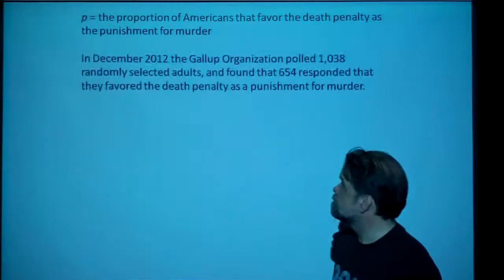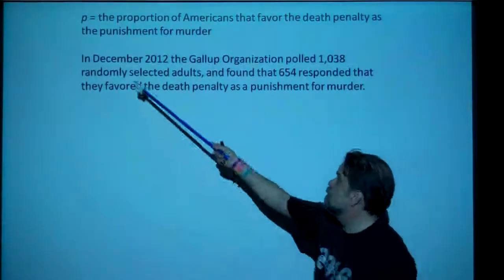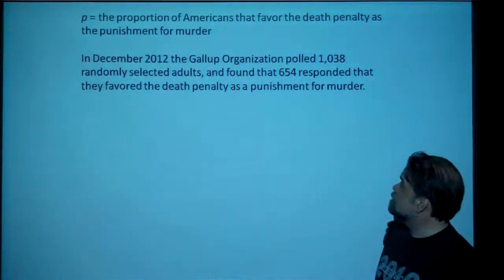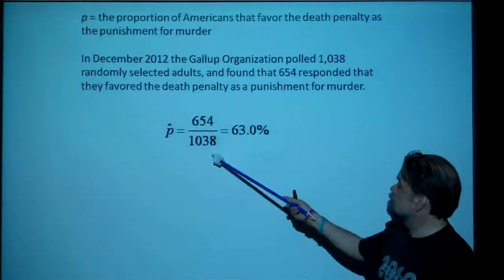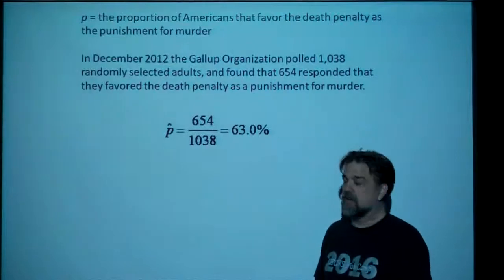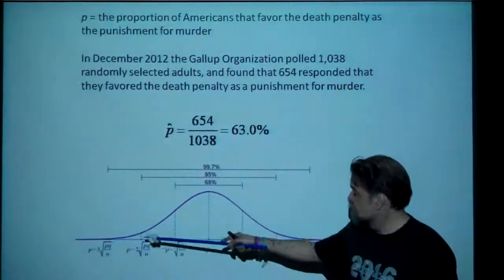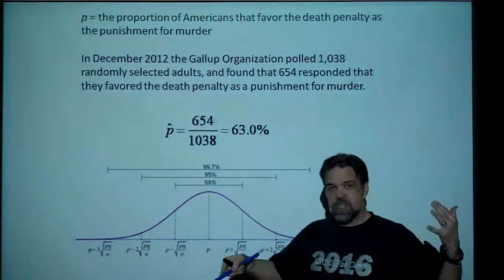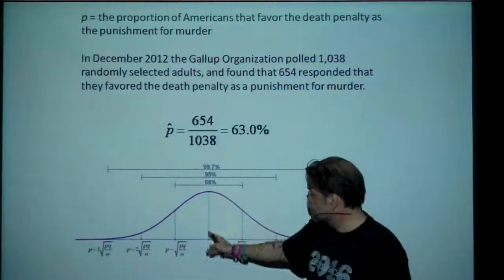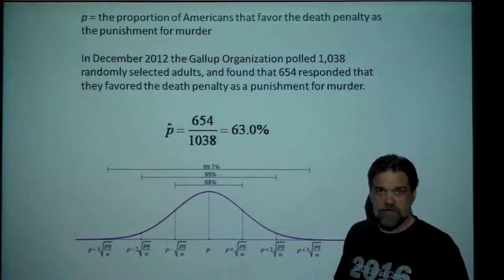So what do we do? We take a survey. The Gallup Organization already did that for us. They went out and polled 1,038 randomly selected adults and found that 654 of them responded that they favored the death penalty as a punishment for murder. 654 turns out to be 63% of 1,038, so that's our p-hat — the p-hat that corresponds to the one sample that we took. Had we taken a whole bunch of samples, we would have gotten a whole bunch of p-hats, and those p-hats would have fallen into a distribution centered around p, our true proportion, which we don't know. The standard deviation would be the square root of p-q over n — again, we don't know what p is.